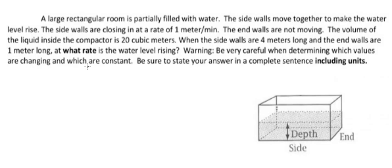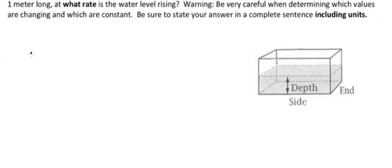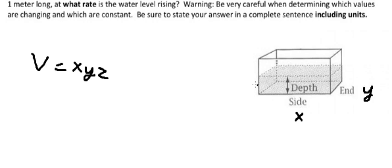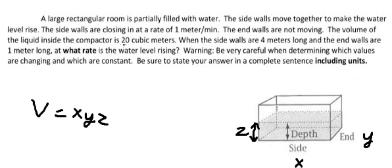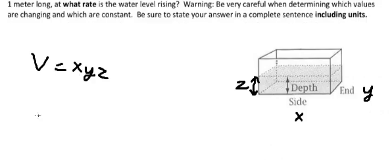Hello everybody. Today I want to talk about calculus — the topic is related rates of change. I want to show you how to answer using the formula for volume. The formula involves x, y, and z, where x is the size, y is the width, and z is the depth of the water. They give us a volume of 5 times 20 cubic meters.